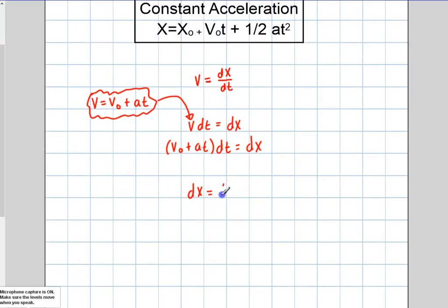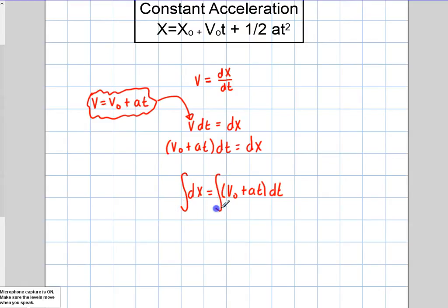I'm going to switch these around because I want dx on the left side. So dx is going to equal v initial plus at, dt. Now I'm going to integrate both sides — the integral of dx and the integral of this function with respect to time. I'll take the boundary points: from x initial to my final position, and from my initial time to my final time.